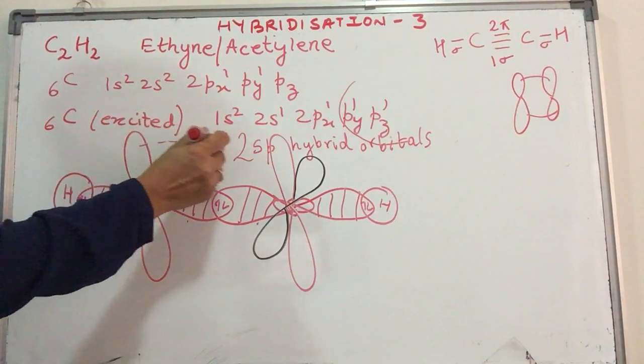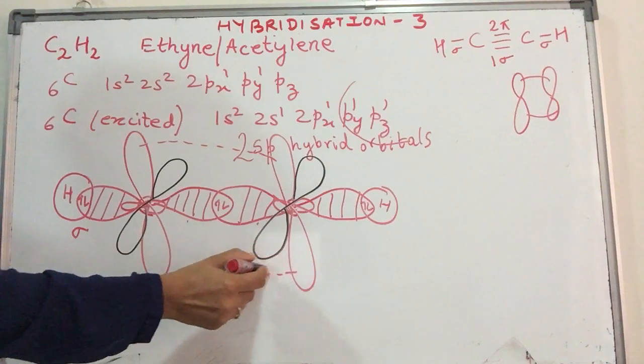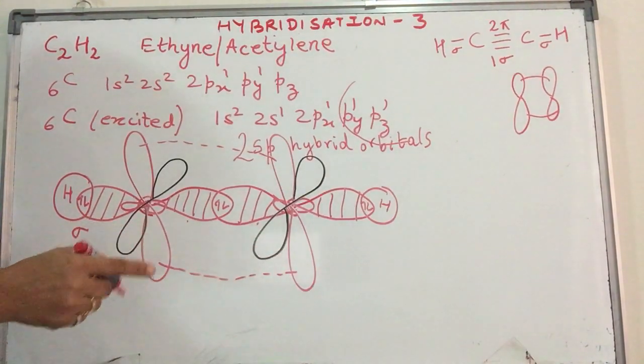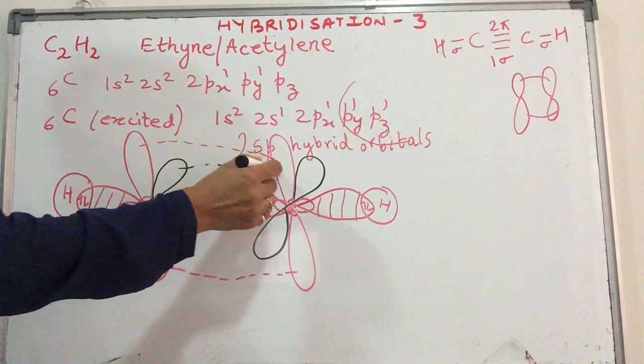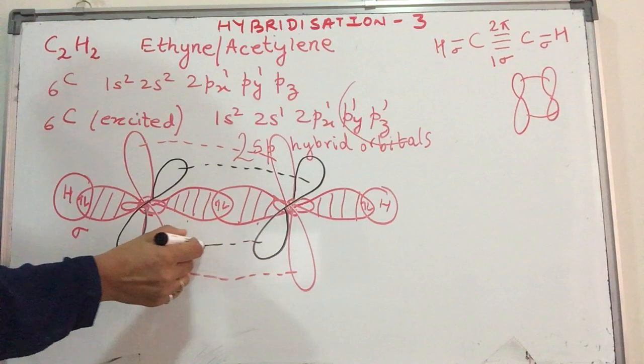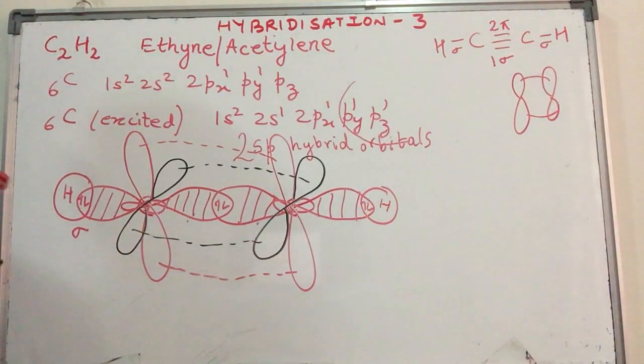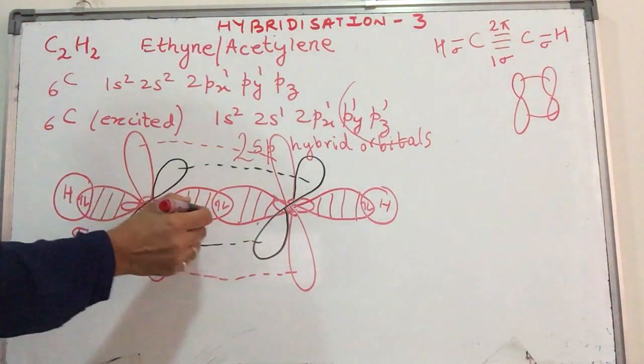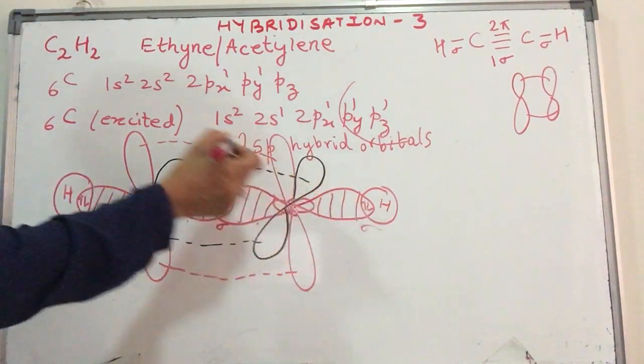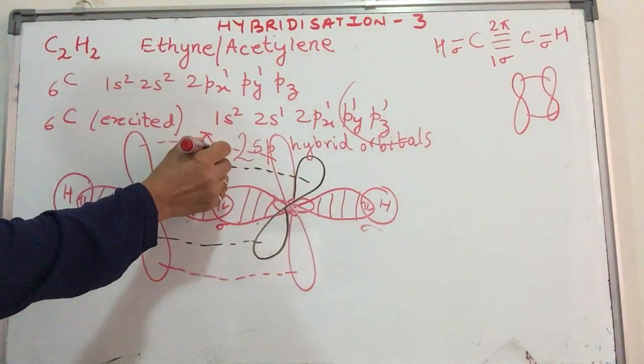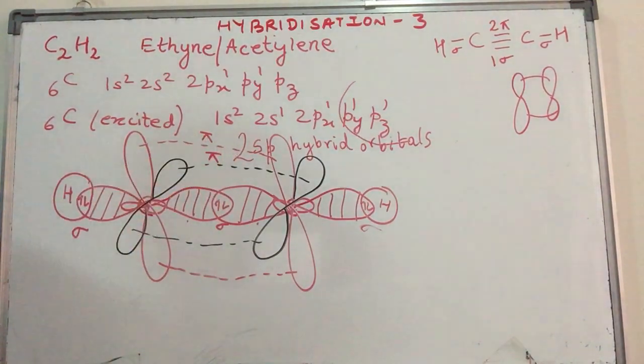Here there will be a pi bond. Again, py will overlap with py, pz will overlap with pz. So we have overlap here. In other words, here we have formed a sigma bond, a sigma bond, a sigma bond, and this is a pi bond, a pi bond. So when I am talking about the molecule of ethyne or acetylene...